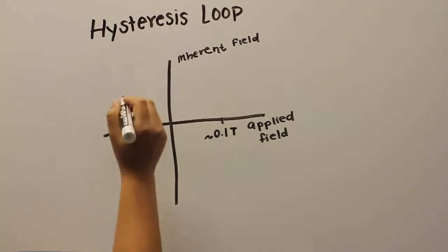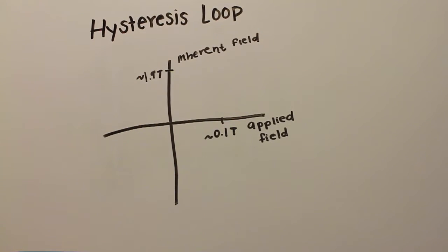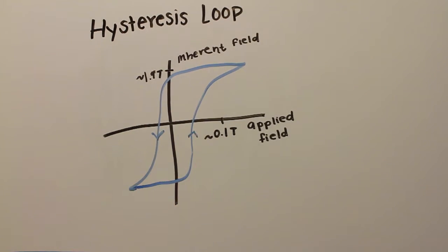In soft magnets, the inherent field reaches values of up to 1.9 teslas at applied fields of less than a tenth of a tesla.